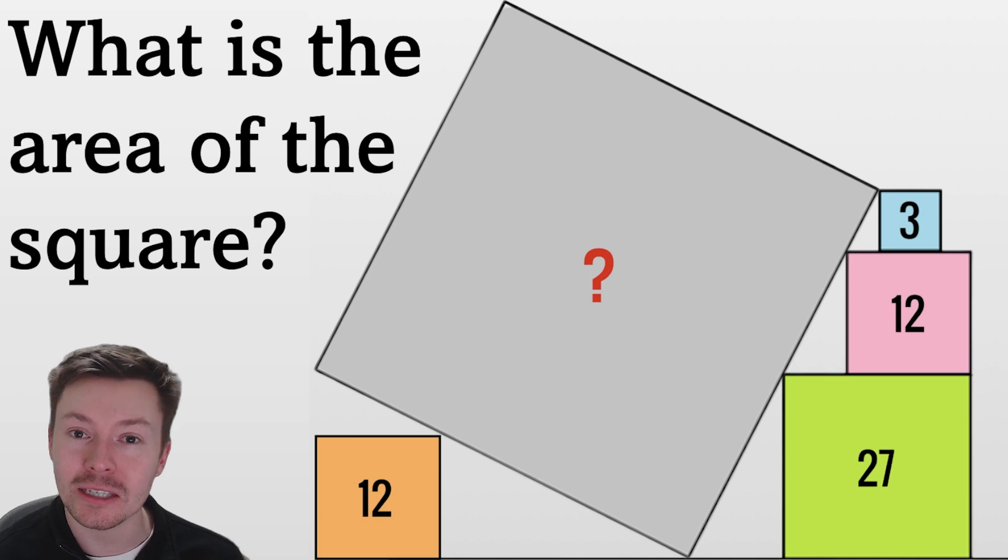On the left hand side of the grey square, it's leaning on an orange square of area 12. On the right hand side, it is leaning on a blue square, a pink square, and a green square with respective areas 3, 12, and 27.